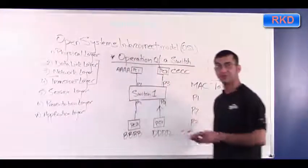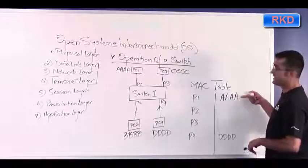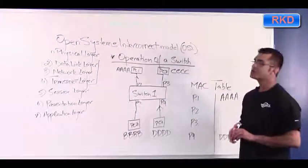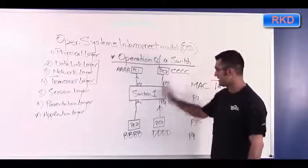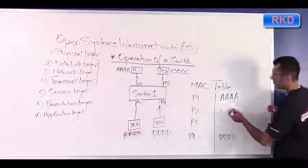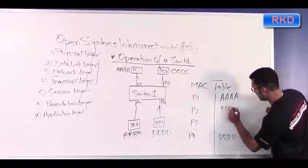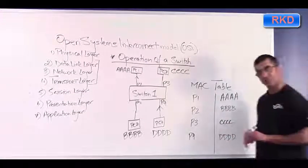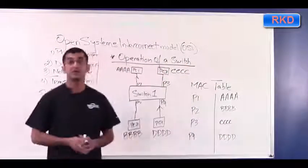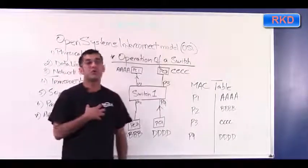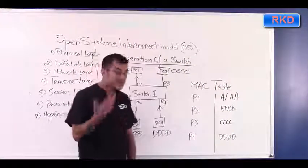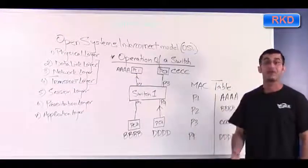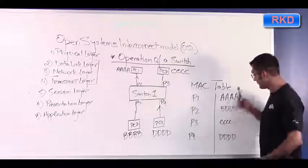At some later time, when PC2 and PC3 communicate or receive traffic, the MAC address table will get fully populated: port 2 will have BBBB and port 3 will have CCCC. Once the MAC address table is fully populated, there will be no flooding behavior. The whole point of flooding is: I don't know where this frame is going — the destination MAC doesn't exist in my table — so I flood everywhere to find the device. Once I know where all devices are, forwarding happens immediately.